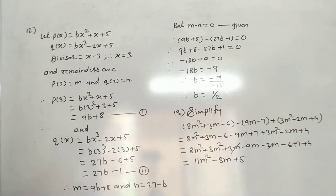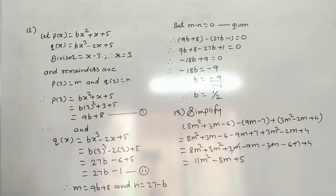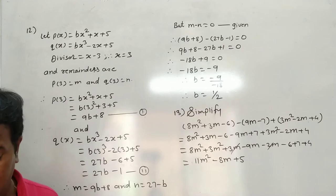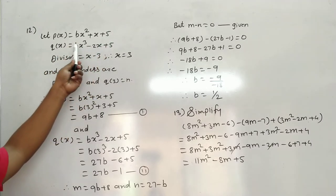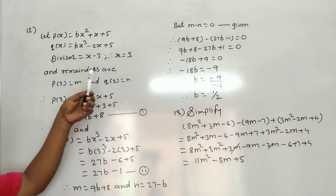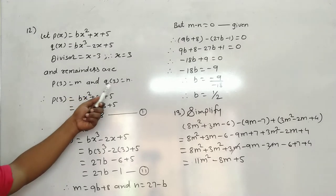Question number 12: Polynomials p(x) = bx³ + x + 5 and q(x) = bx³ - 2x + 5 are divided by the polynomial x - 3. Their remainders are m and n respectively, and m - n = 0. We need to find the value of b.